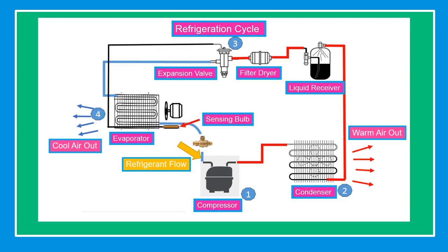The refrigeration cycle has four major components. Number one, the compressor, which is the heart of the system, is a pump that pressurizes the refrigerant. Number two, the condenser facilitates heat transfer. Number three, the expansion valve regulates the flow of refrigerant going to the evaporator. And number four, the evaporator receives the liquid refrigerant.